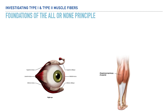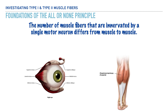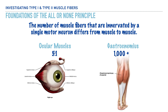Now that we have our definition for a motor unit, let's add a foundational statement: the number of muscle fibers innervated by a single motor neuron differs from muscle to muscle. For example, in our ocular muscles we may find as few as five muscle fibers innervated by a single neuron, whereas for muscles like the gastrocnemius we might find as many as 1,000 or more muscle fibers innervated by a single motor neuron.